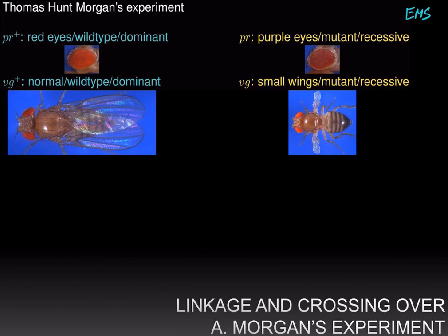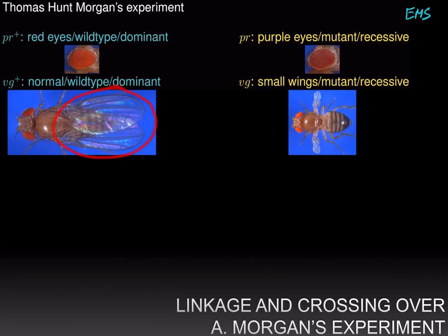Now let's move on to Thomas Hunt Morgan's experiment where he was tracking the inheritance of two traits. One is eye color, with two alleles: the wild type allele PR+ gives red eyes — the most common allele found in wild flies — and PR, which gives purple eyes. The other trait Morgan was tracking was vestigial wings, where the wild type allele VG+ gives normal-looking wings.